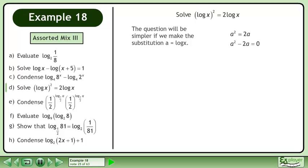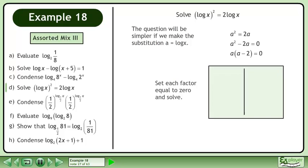Bring all terms to the left side. Factor the binomial. Set each factor equal to 0 and solve. Begin with a equals 0. Replace a with log x. Use the 7-rule to convert to exponential form. The result is x equals 1.